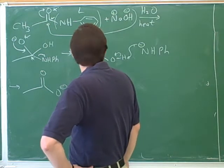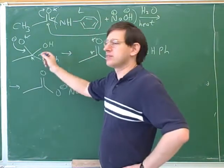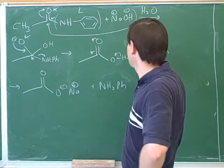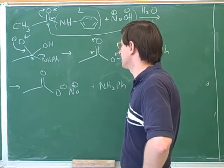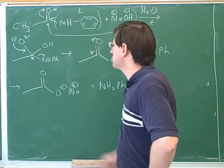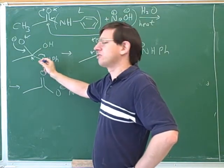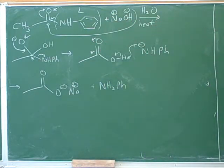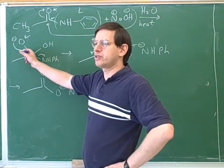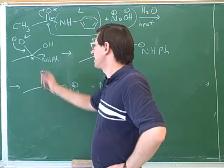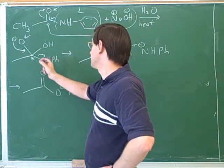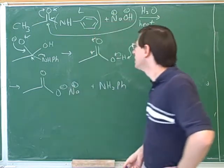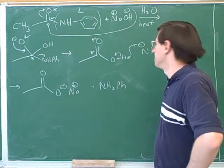Nitrogens are usually terrible leaving groups. That's why this is so unreactive, so it's a little surprising that the nitrogen can leave here when it's neutral. Do you remember what's the driving force for this step — what is it that's kicking this leaving group off even though it's not a good leaving group? The oxygen wants to return to a carbonyl. Exactly right. Molecules like having carbonyls so much that they'll even kick off bad leaving groups in order to reform the carbonyl. So even though the neutral nitrogen is a poor leaving group, it gets kicked off by the power of reforming the carbonyl.